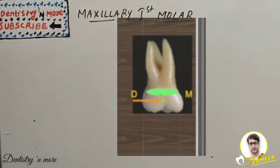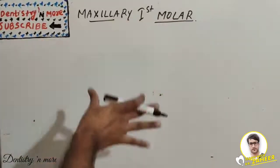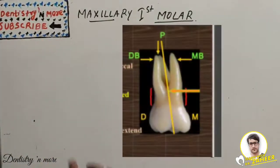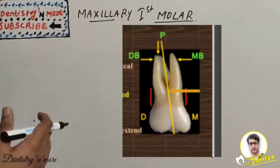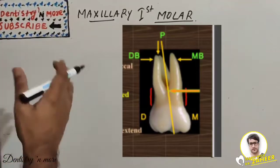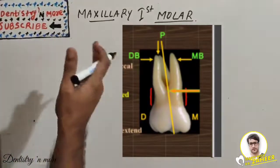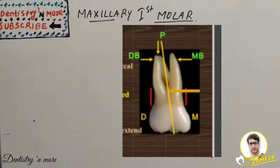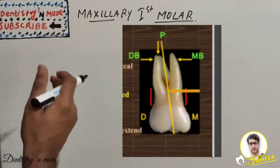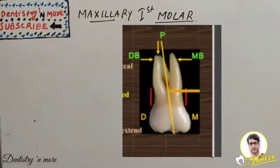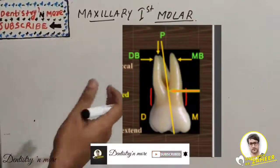There is also a cervical ridge on the buccal side. From the buccal aspect, the root trunk is approximately four millimeters, and three roots are visible. The axes of the roots are inclined distally. There is a deep developmental groove extending on the root trunk.